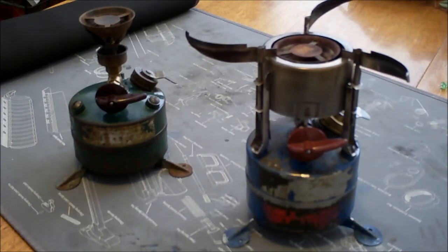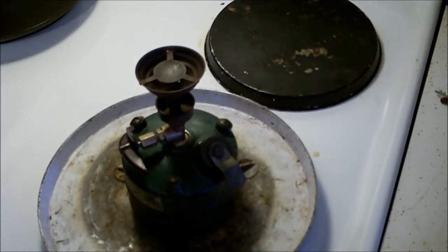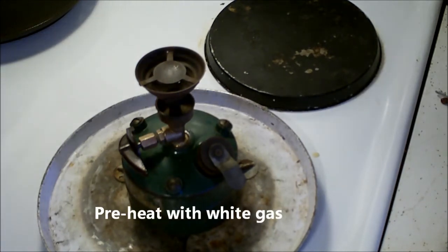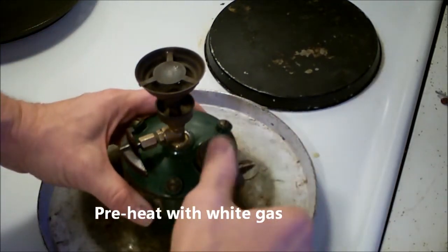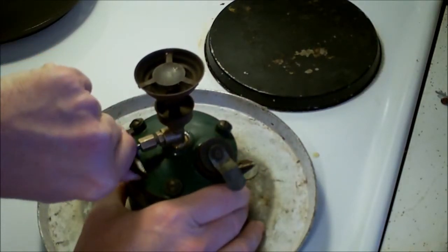I wanted to go over some failure points and how to prime these, so let's get started. I'm going to use the Coleman stove since it has the windscreen potholder remote, and probably the simplest way of priming this is just pump it up five, six, eight times.